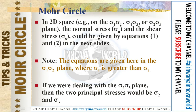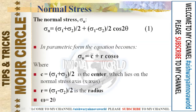Now let's see the normal stress formula: sigma_n = (sigma_1 + sigma_2)/2 + (sigma_1 − sigma_2)/2 · cos(2θ). We can also write this as C + R·cos(ω), where ω is the 2θ value. Here C is the center of the Mohr's circle and R is the radius. So C = (sigma_1 + sigma_2)/2 and R = (sigma_1 − sigma_2)/2, as shown on screen.